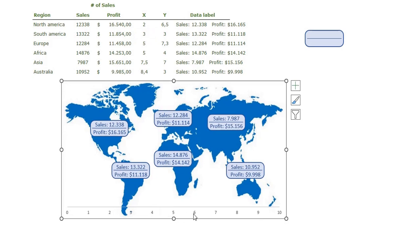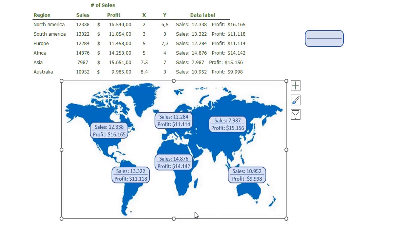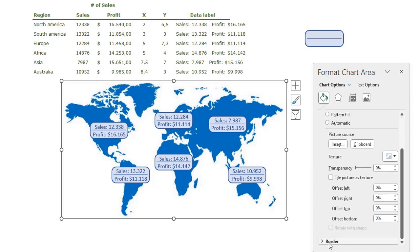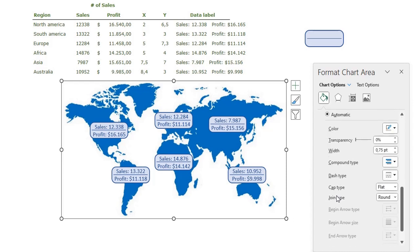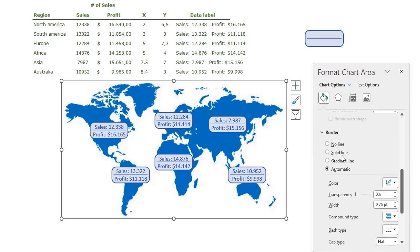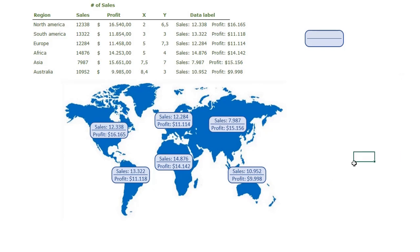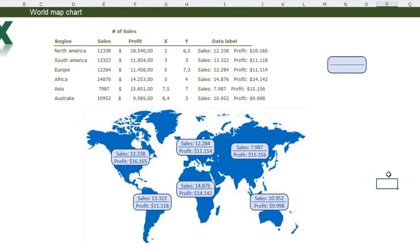The only thing left to do is delete the axes and remove the chart border. I select my chart, press Ctrl+1, go to Border, and choose No Line — so now there is no outline around my chart.